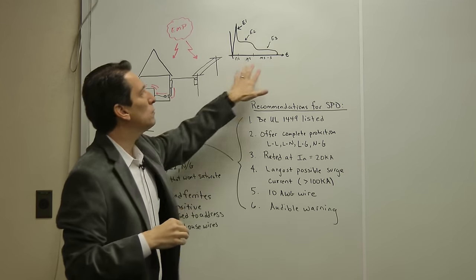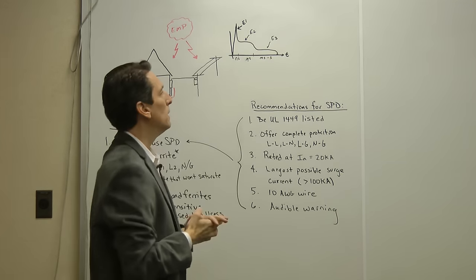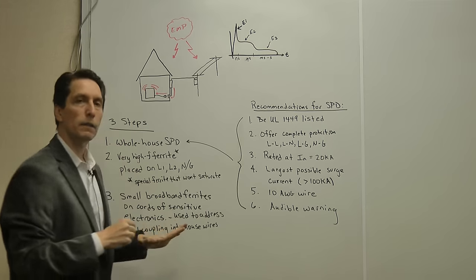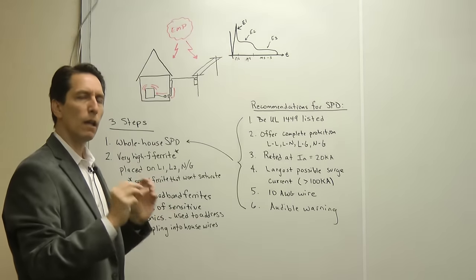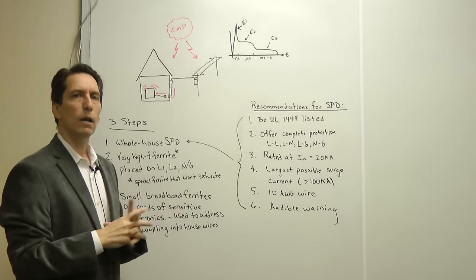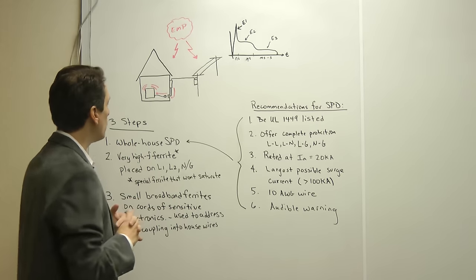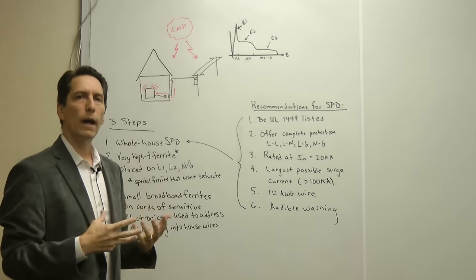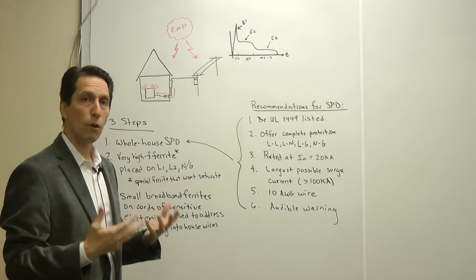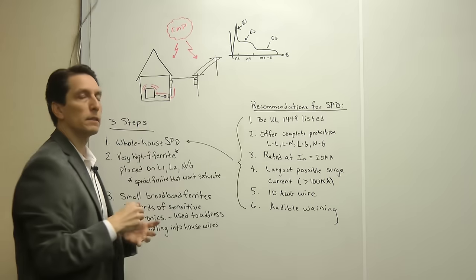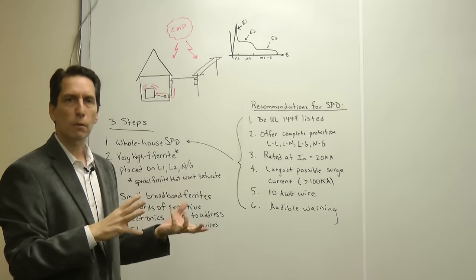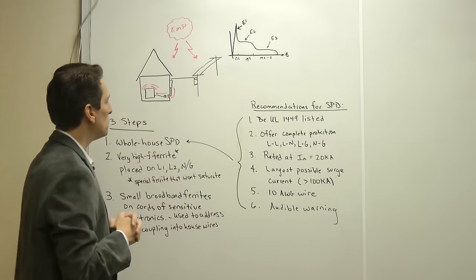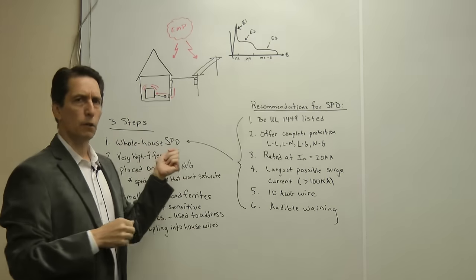To have a true system that protects your home, it has to address all three of those. There are basically three steps to protecting your home. The first thing is you want to put a good whole-house surge protection device on your home. It usually mounts right next to the breaker box in your garage — sometimes they're mounted outside — but it connects into your breaker panel.